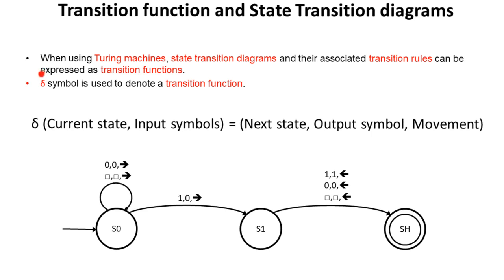We use this symbol here to denote a transition function, and the format of a transition function is as below: current state and current input symbol equals next state, output symbol, and movement.